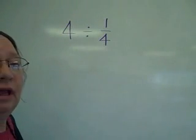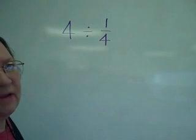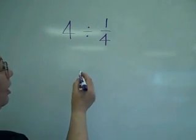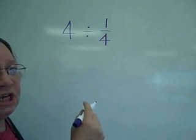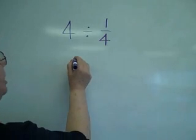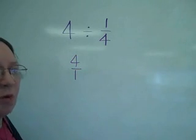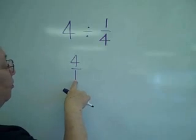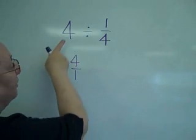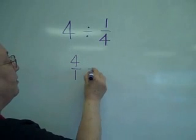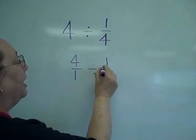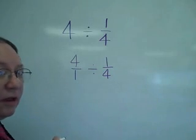Now let's use the rule to find this so I don't have to draw pictures all the time. The first rule is that I have to change everything to an improper fraction. So the four, the whole number four goes over one. Now I know that one into four goes four, so I have not changed the value at all. What I have now is 4 over 1 divided by 1 over 4.